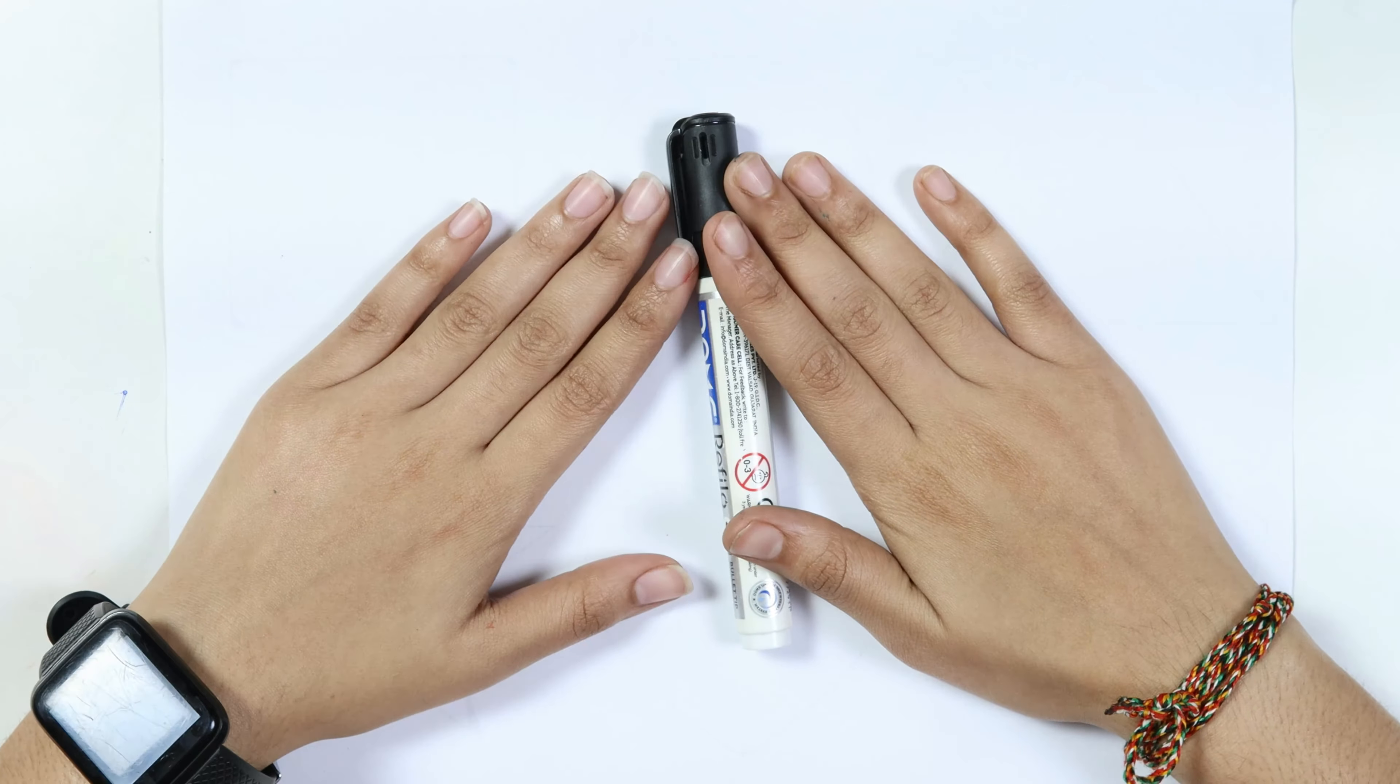This is the black color. Which color kids? This is the black color. Square. Circle.